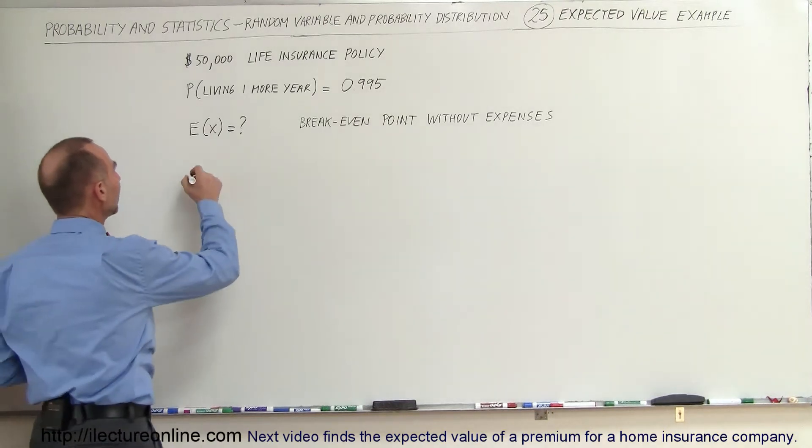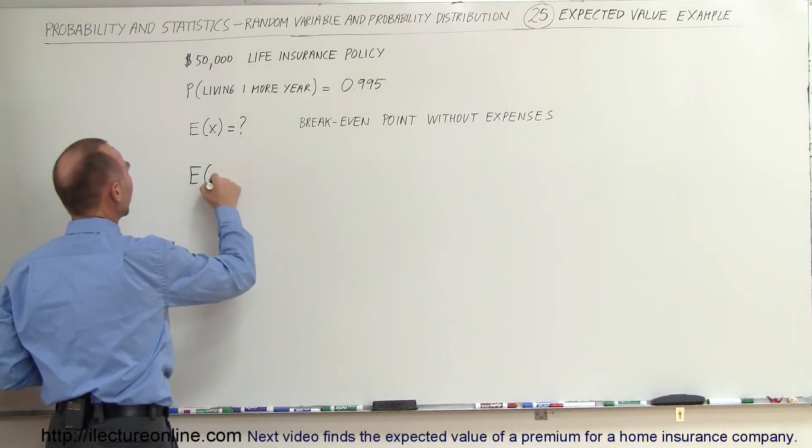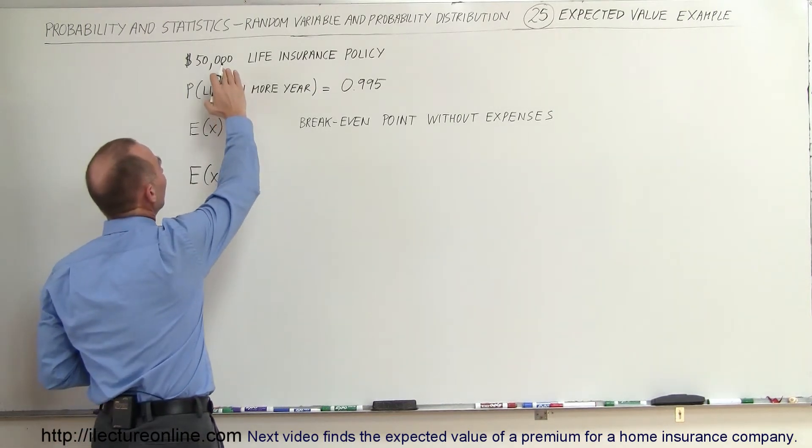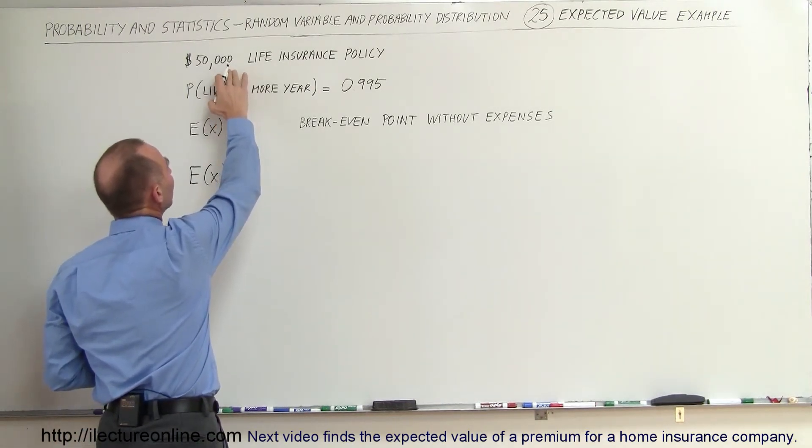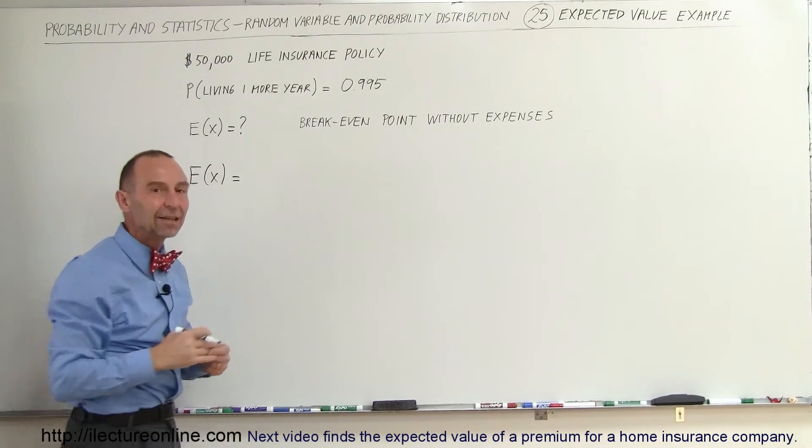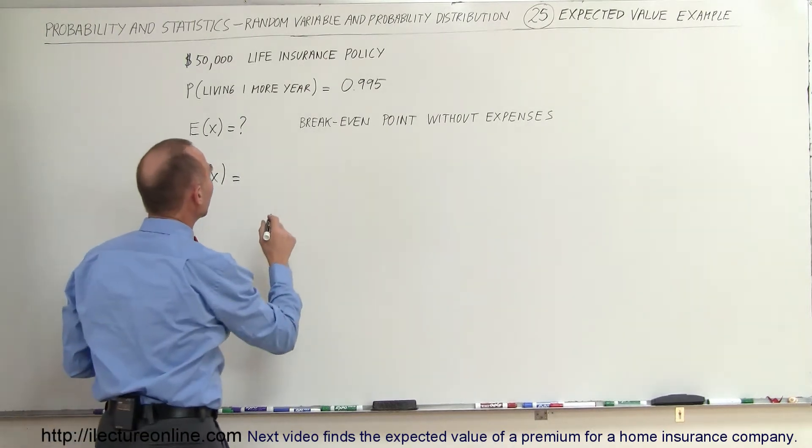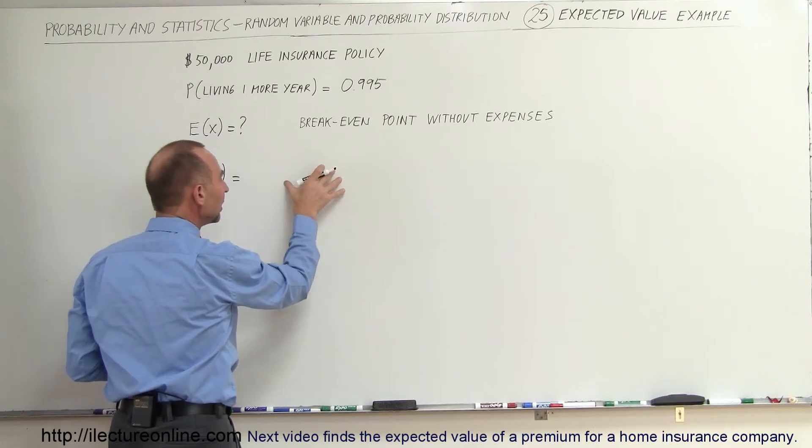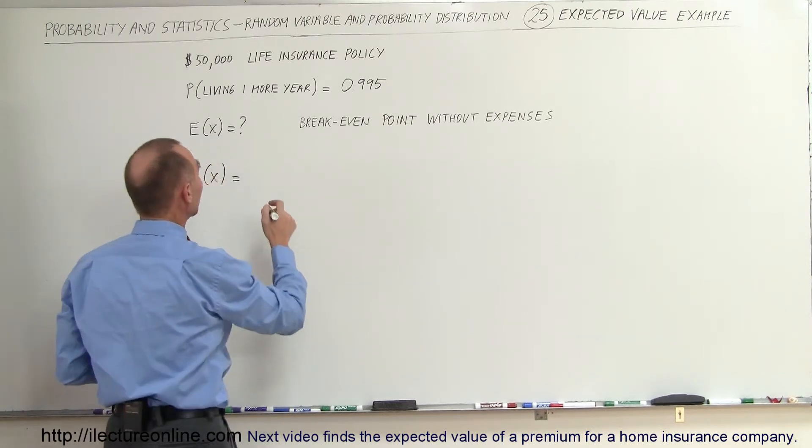All right. So the expected value then is as follows. E sub x is equal to, well, if they have to pay out this $50,000 that's a negative against the company. So we're going to multiply the probability that that will happen times the amount of money that they will have to pay out, which is a negative quantity.